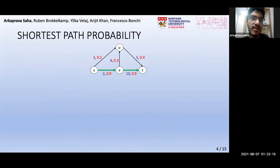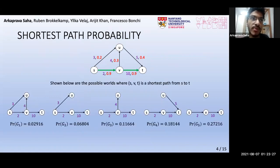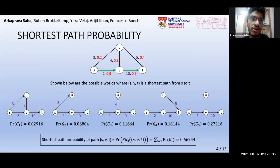Continuing with the same example, we now demonstrate the concept of shortest path probability of a path in an uncertain graph. Suppose we are interested in the green path here. We consider all possible worlds where this path is shortest, which in this case are these five possible worlds, and compute their probabilities. The shortest path probability of this path is then defined as the sum of the above probabilities, as shown in the last line.